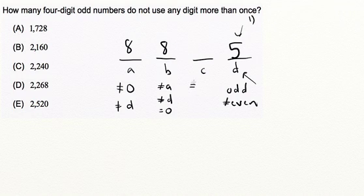And then C cannot be A, cannot be B, and obviously cannot be D either. There still can be zero, so that leaves seven possibilities.